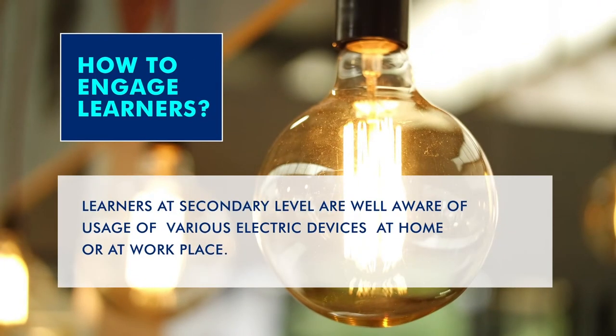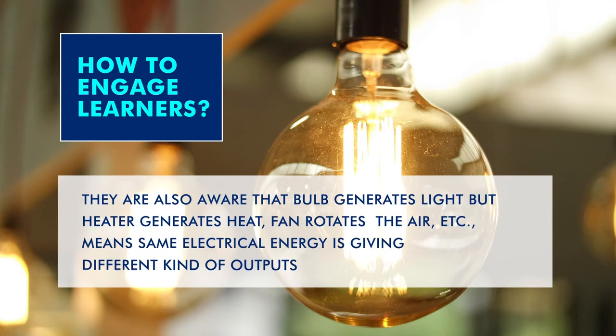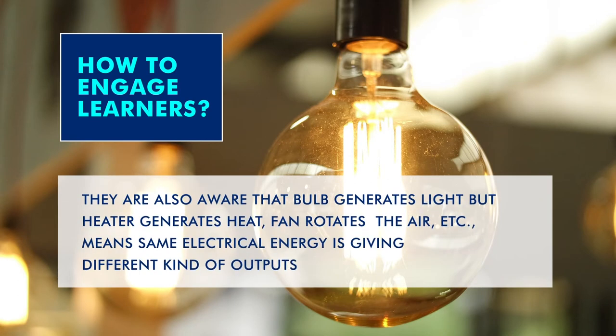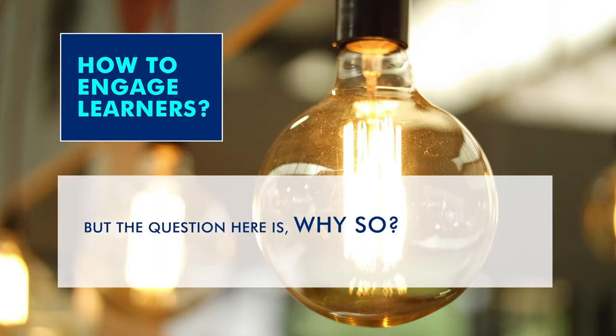When we talk about topics like electric current or electric circuit, our learners already know about various things. They know the uses of electric devices at home and at the workplace. They are aware that a bulb generates light, a heater generates heat, and a fan rotates air in the room. The same electrical energy used in different devices gives different outputs — converted into light, heat, and mechanical energy. But the question is: why?